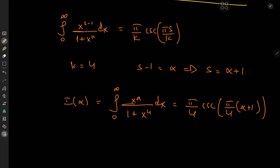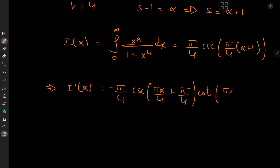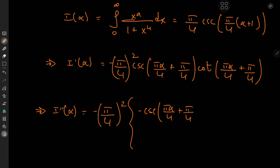Now we differentiate I(α) with respect to α. The derivative of cosecant is −cosecant times cotangent, and by the chain rule we pick up a factor of π/4, so I'(α) = −(π/4)² · cosecant(πα/4 + π/4) · cotangent(πα/4 + π/4). Differentiating again for the second derivative, we apply the product rule, yielding a term with cosecant times cotangent squared.